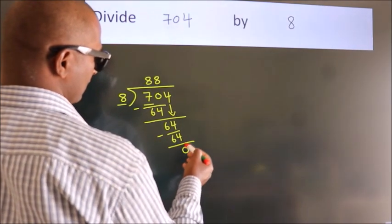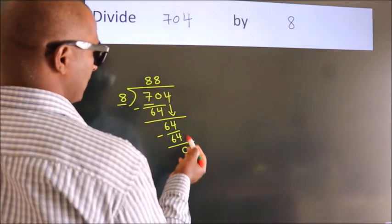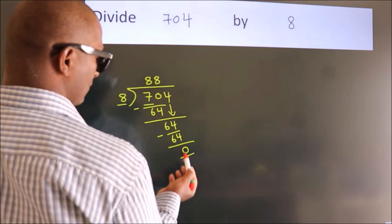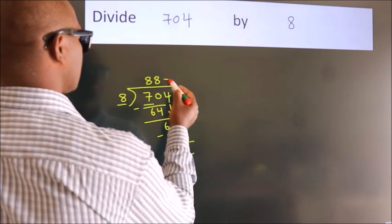After this, no more numbers to bring it down and we got remainder 0. So this is our quotient.